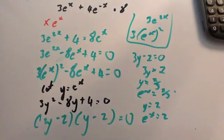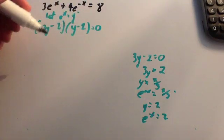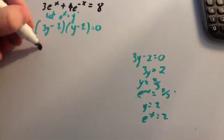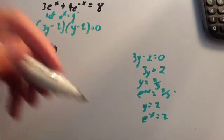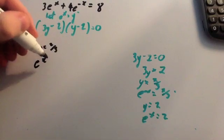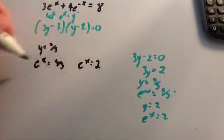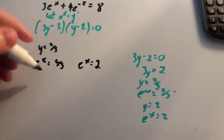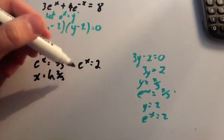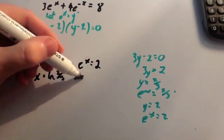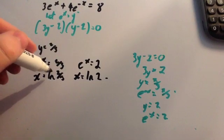Let me just rub this off and finish it off. There's the question again, and there's what we got when we factorized it. We worked out that e to the x equals 2 thirds, and e to the x equals 2. Taking the natural log of both sides gives x equals ln(2 thirds), and x equals ln(2). So there are your two answers: x equals the natural log of 2 thirds, and x equals the natural log of 2.